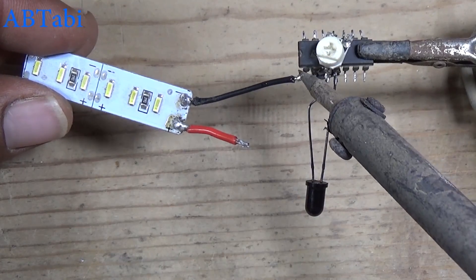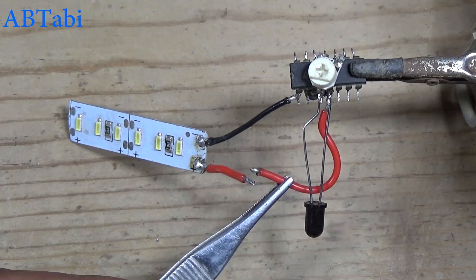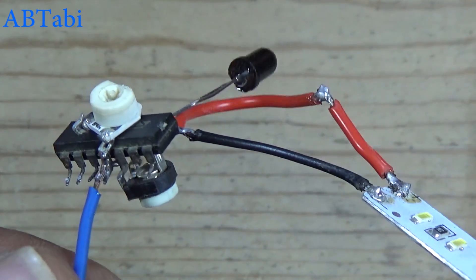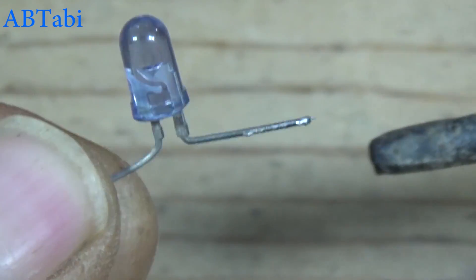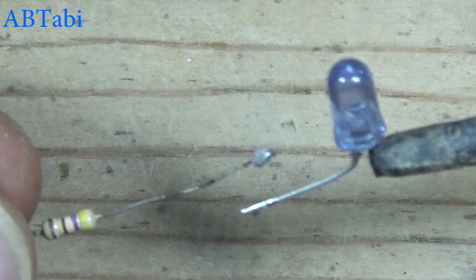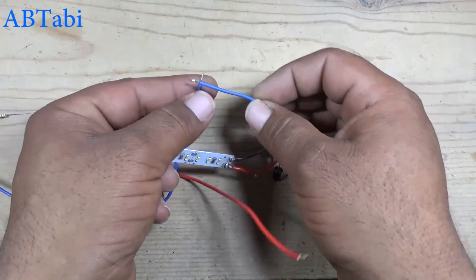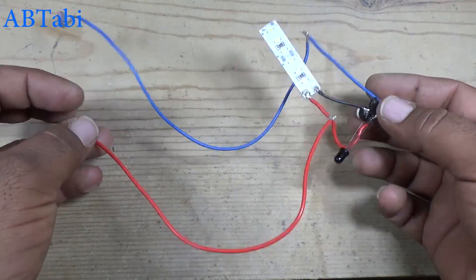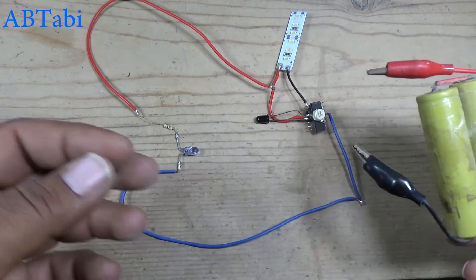The 12 volt LED light connects with IC pin 1 and positive supply. You can also use a buzzer or relay to control any device. The infrared transmitter sensor connects with a 470 ohm resistor.